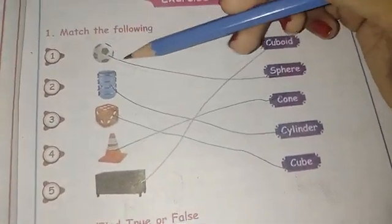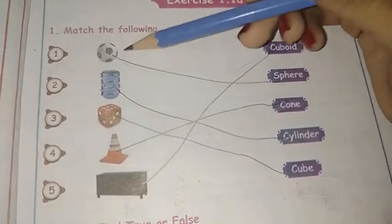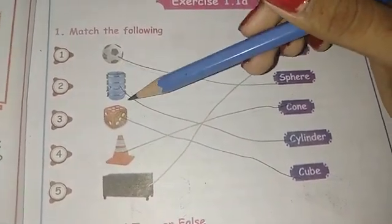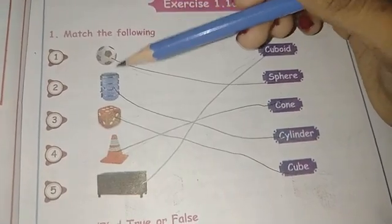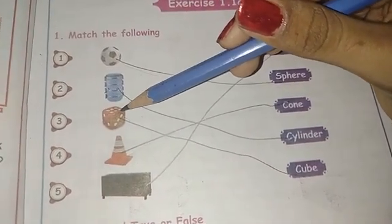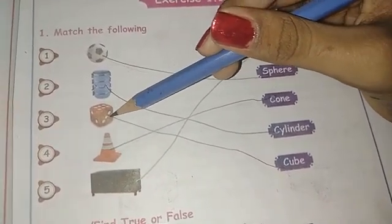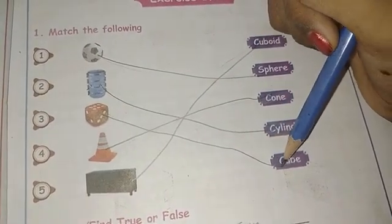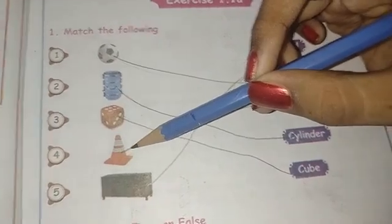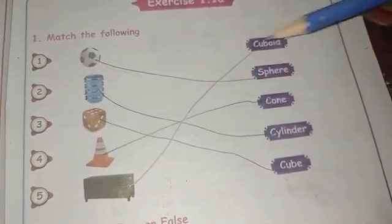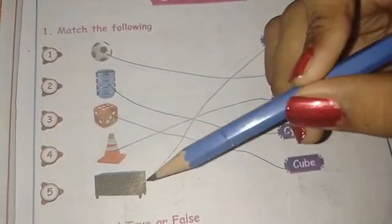Next, this is a tiffin box. Tiffin box goes to cylinder, yes. Next, it's a dice. Dice goes to cube. Next, what's this? It's a traffic cone, so it goes to cone.